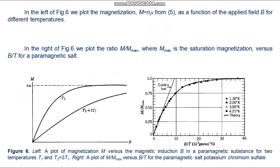In the left of figure 6, we plot the magnetization M equals N·μ from formula 5 as a function of the applied field B for different temperatures. For small values of B, M is essentially a straight line whose slope is greater at lower temperature. As B is increased, the magnetization approaches the saturation value N·μ asymptotically — the condition in which all magnetic dipole moments are aligned with B. The field required for saturation increases with temperature. In the right of figure 6, we plot the ratio M over M_max versus B divided by T for a paramagnetic material; the curve predicted by the exact theory agrees very well with experimental points.